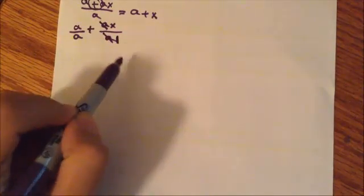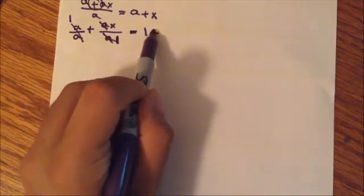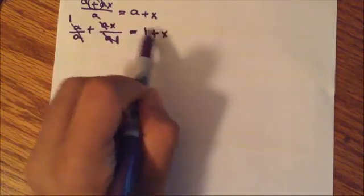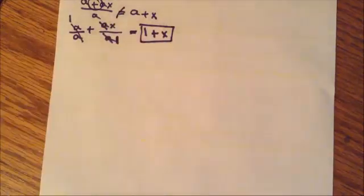Now we can divide out our a's. So a divided by a is going to give us one for the denominator, and a divided by a is simply going to be one. So we're going to have one plus x over one is simply going to be one plus x. So this is the correct answer.